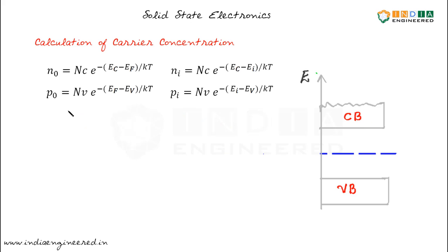We have found the equation for carrier concentration, that means the number of electrons and holes per centimeter cube of semiconductor material. These two are our general equations, and from this we have assumed intrinsic material and calculated Ni and Pi, that is the carrier concentration in intrinsic material.